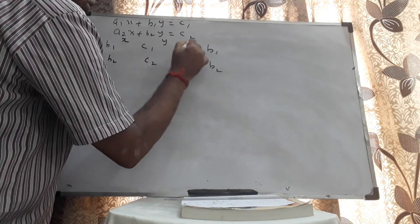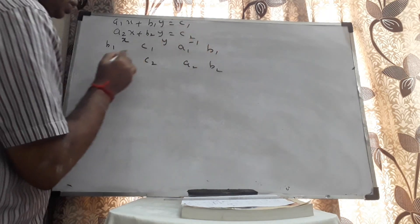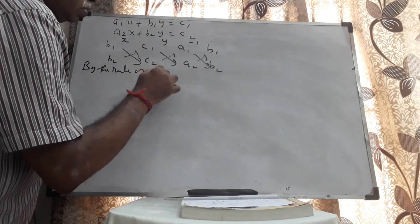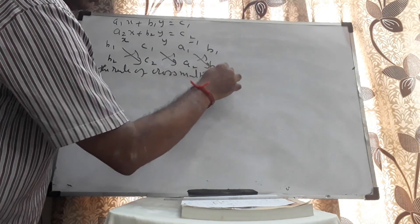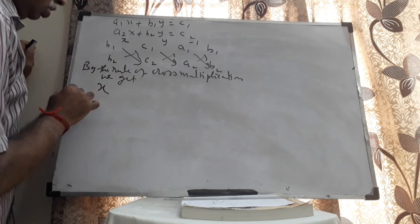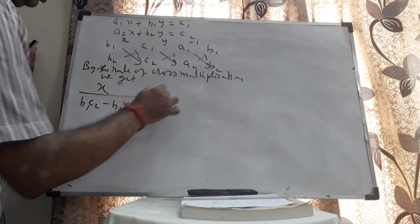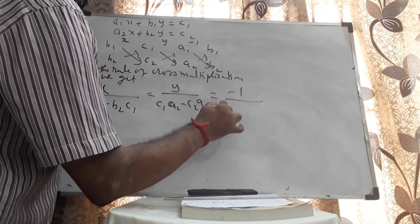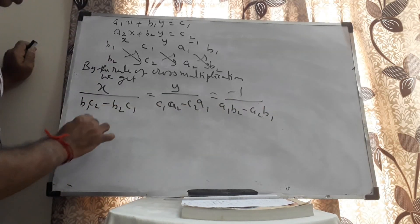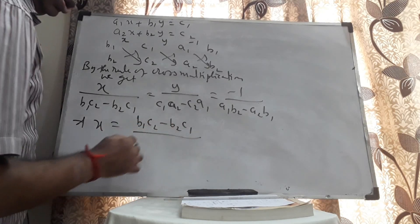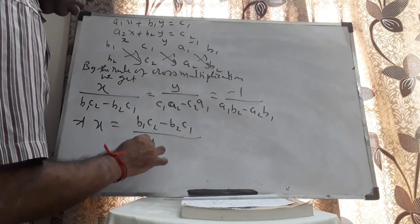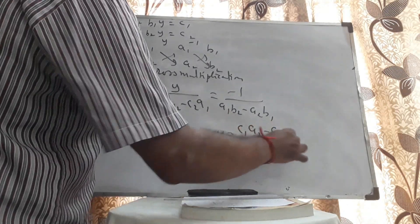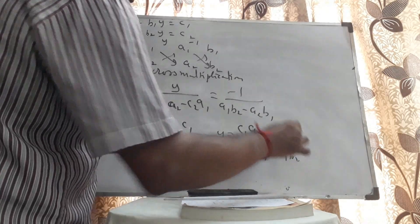I will write x in between the first two entries, y in between the second and third entries, and minus 1 in between the third and fourth entries — provided constants are on the right-hand side. I will put arrow marks like this. By the rule of cross multiplication, we get: x divided by (B1·C2 minus B2·C1) is equal to y divided by (C1·A2 minus C2·A1) is equal to minus 1 divided by (A1·B2 minus A2·B1). Which implies x equals (B1·C2 minus B2·C1) divided by (A2·B1 minus A1·B2), and similarly y equals (C1·A2 minus C2·A1) divided by (A2·B1 minus A1·B2).